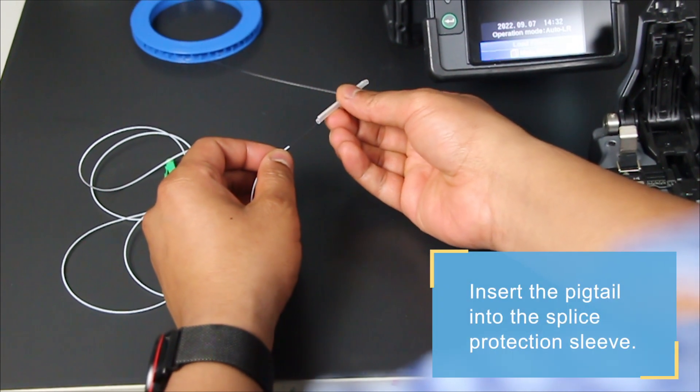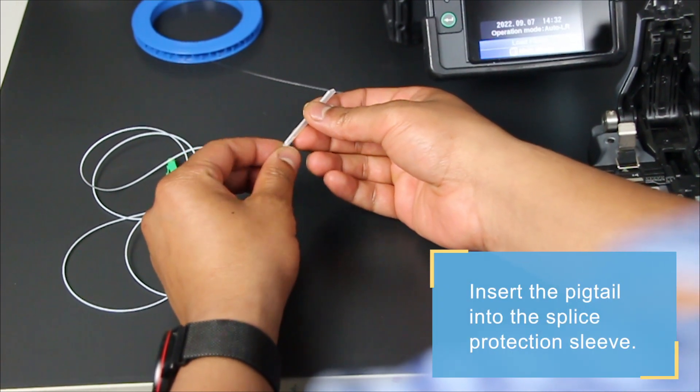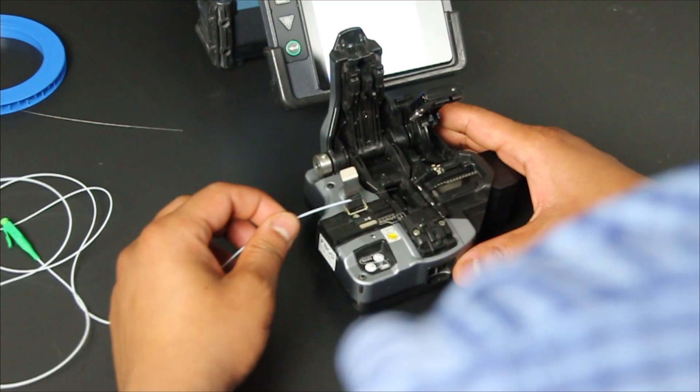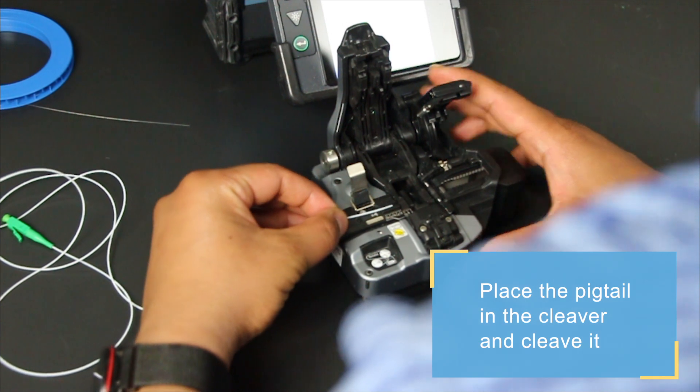First, install the pigtail into the splice protection sleeve and pull it through. Cleave the pigtail.